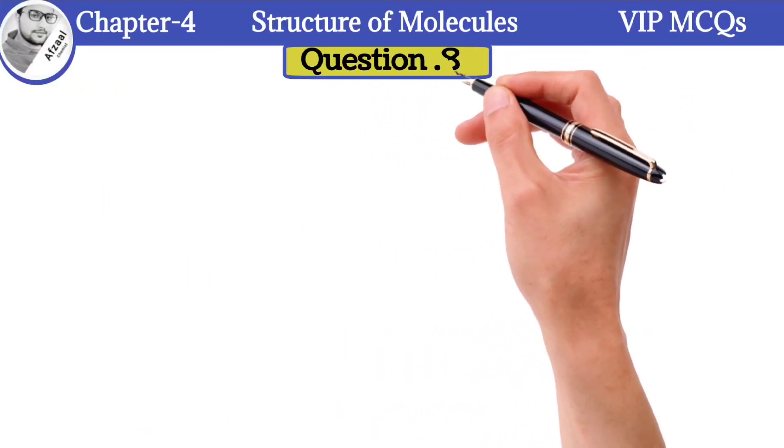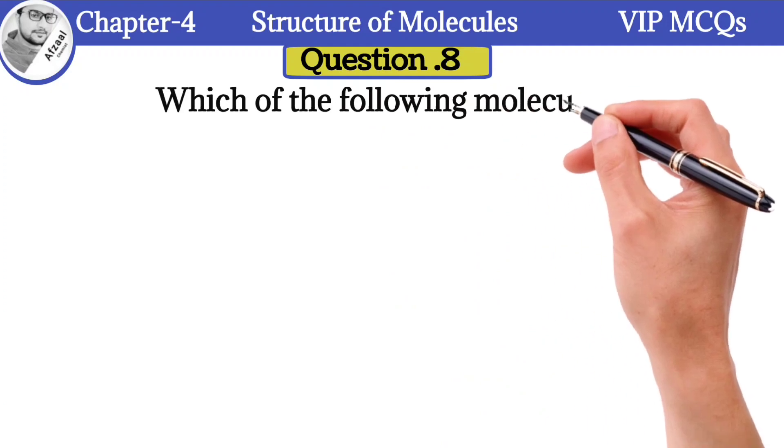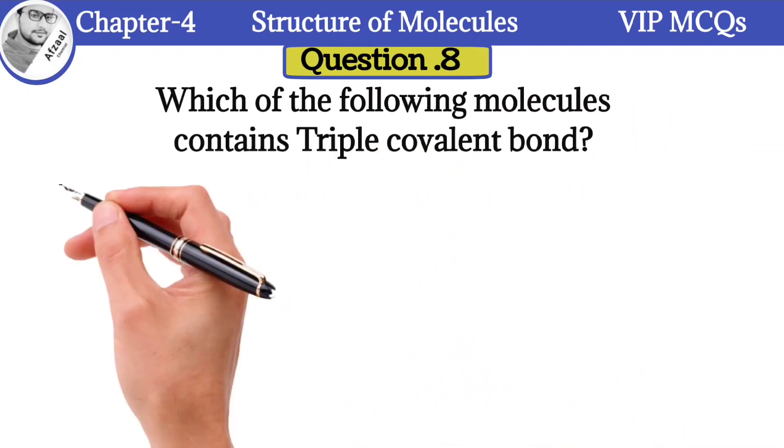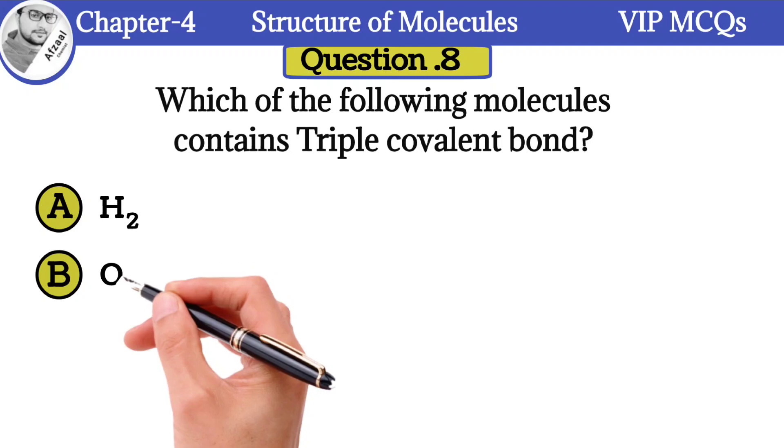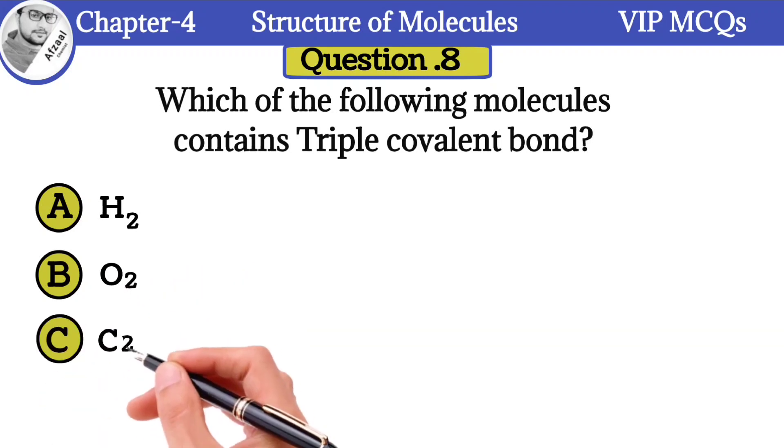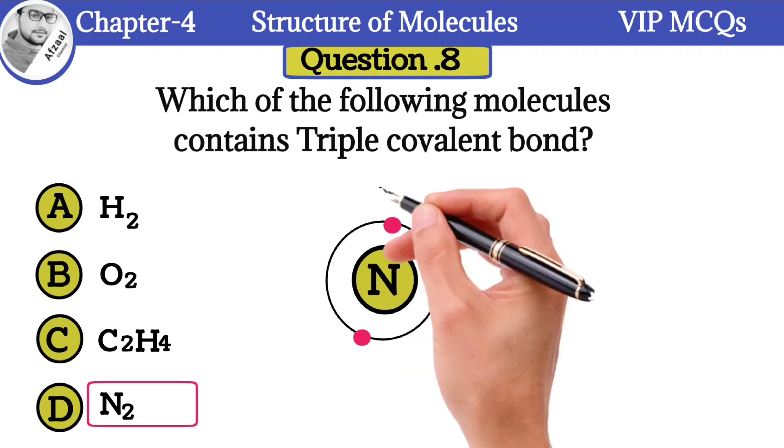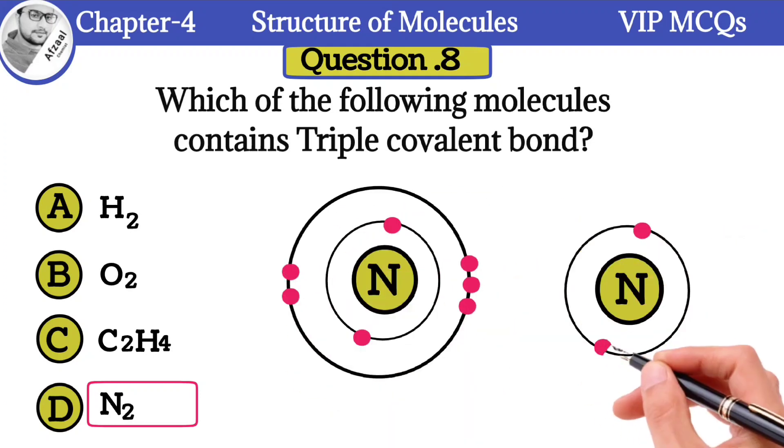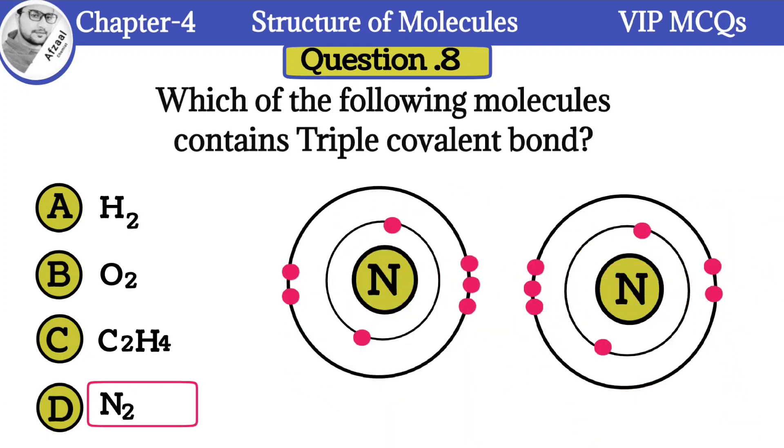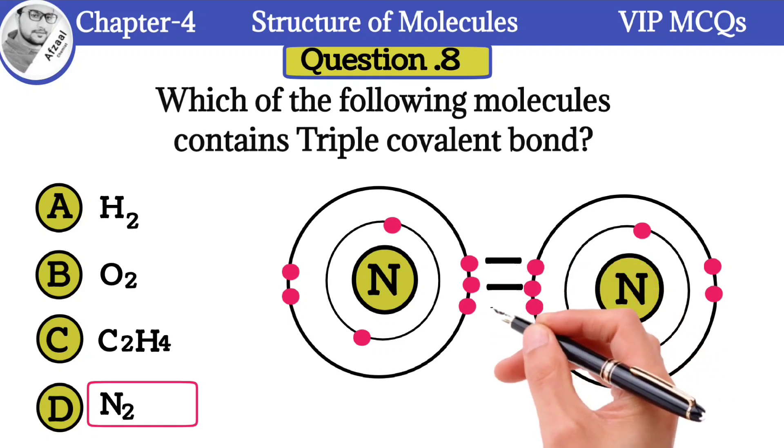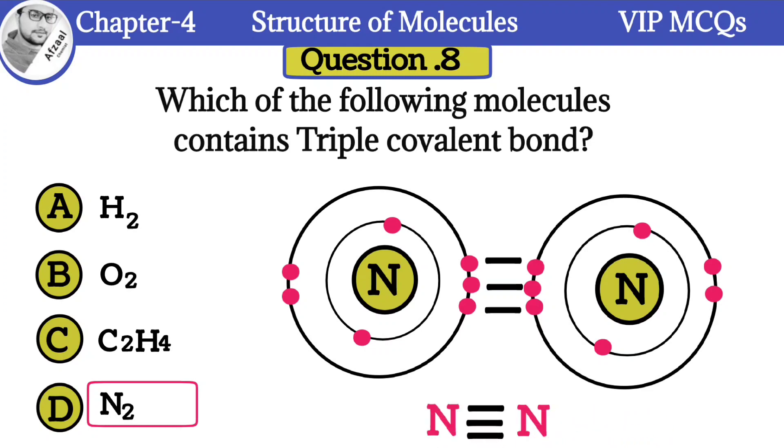Question number 8: Which of the following molecules contains triple covalent bond: A) H2, B) O2, C) C2H4, D) N2. The correct answer is N2. Nitrogen gas contains triple covalent bond. Each nitrogen atom contains five electrons in its valence shell. They require three electrons to complete their octet, so each atom shares three electrons. Thus three bond pairs are formed, and the bond is known as a triple covalent bond.